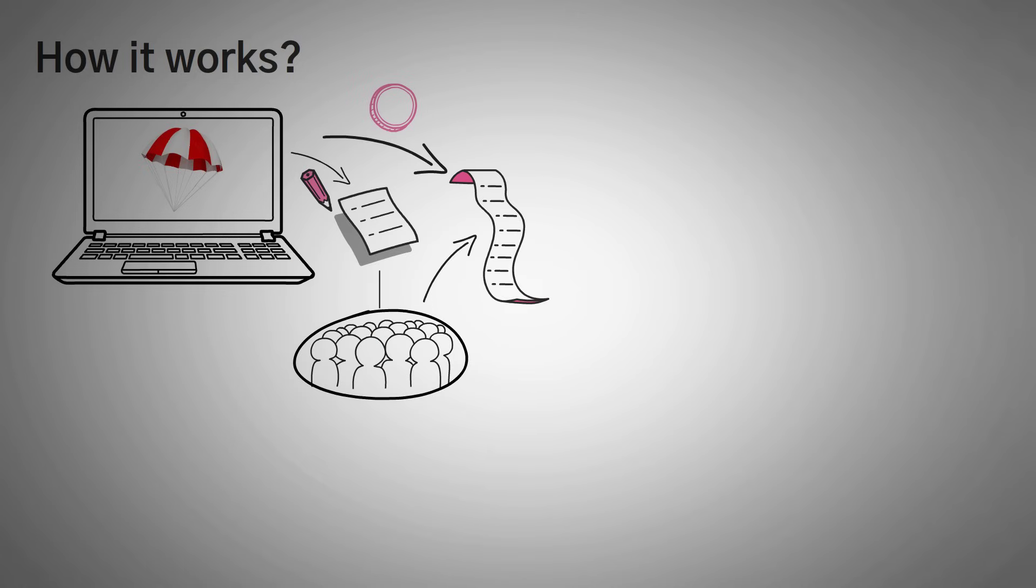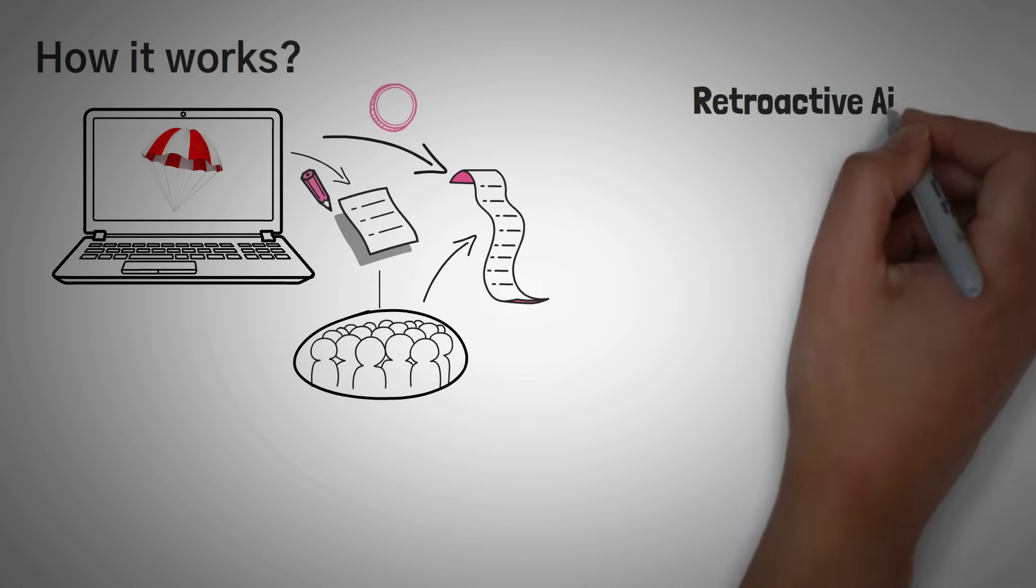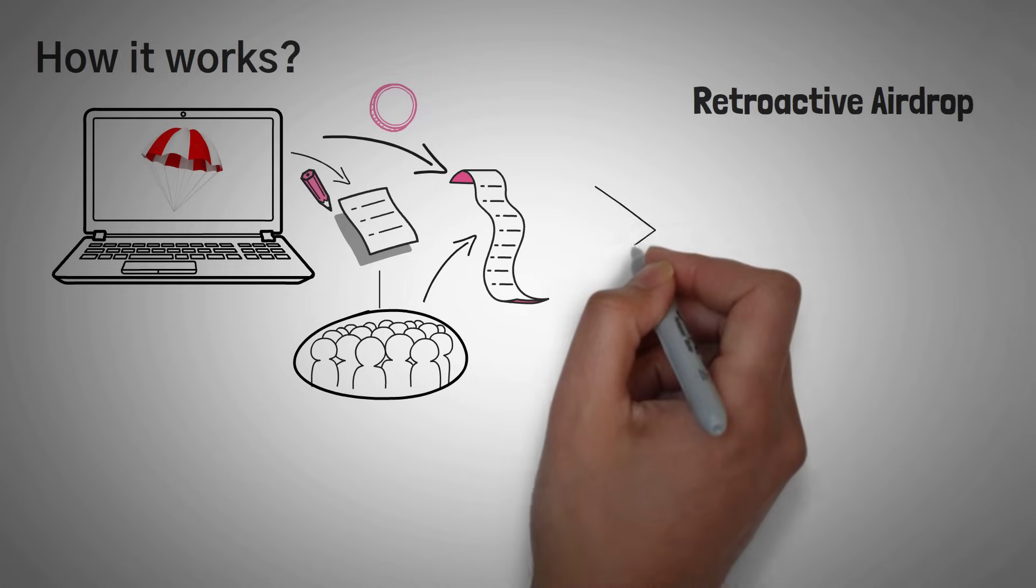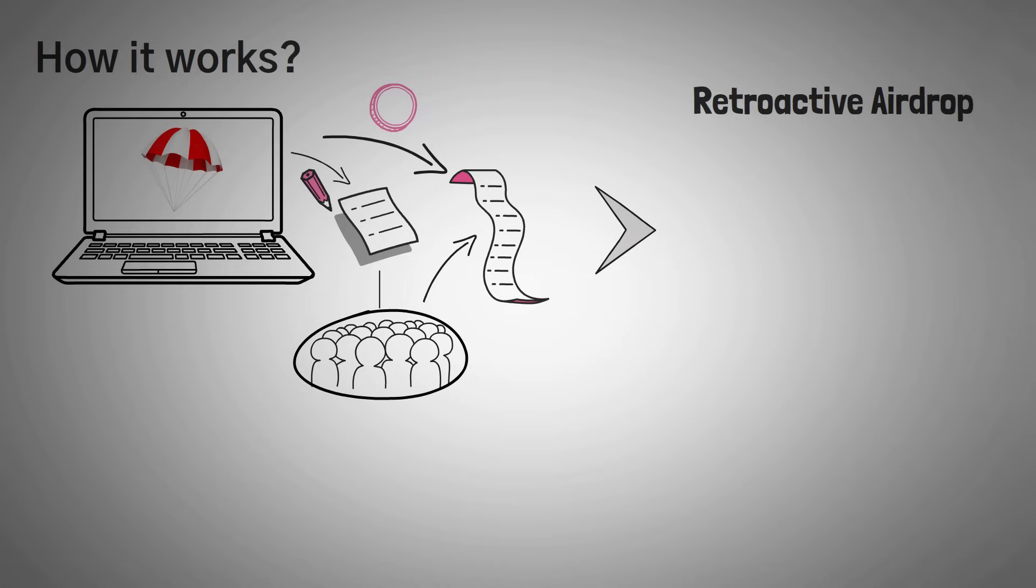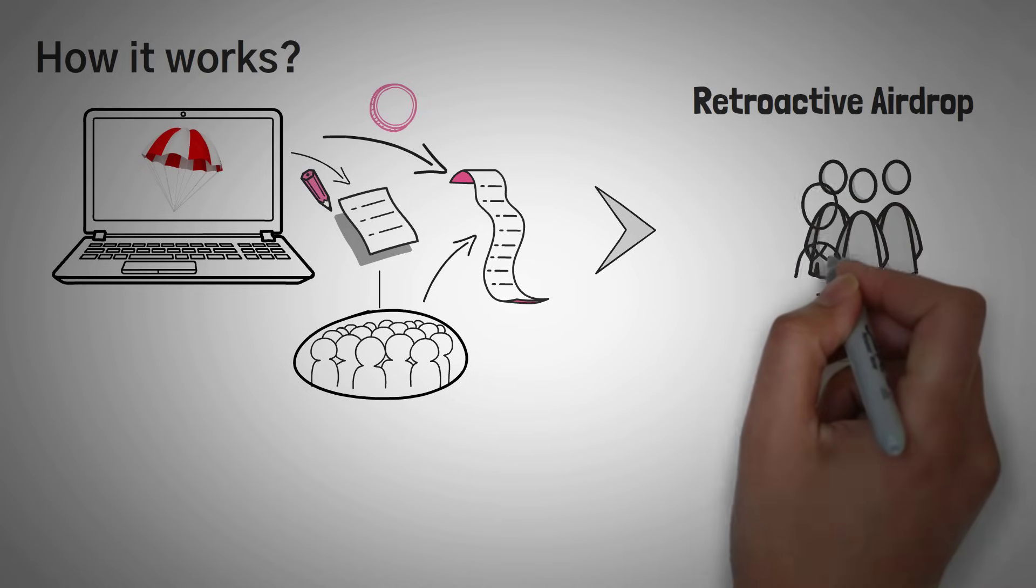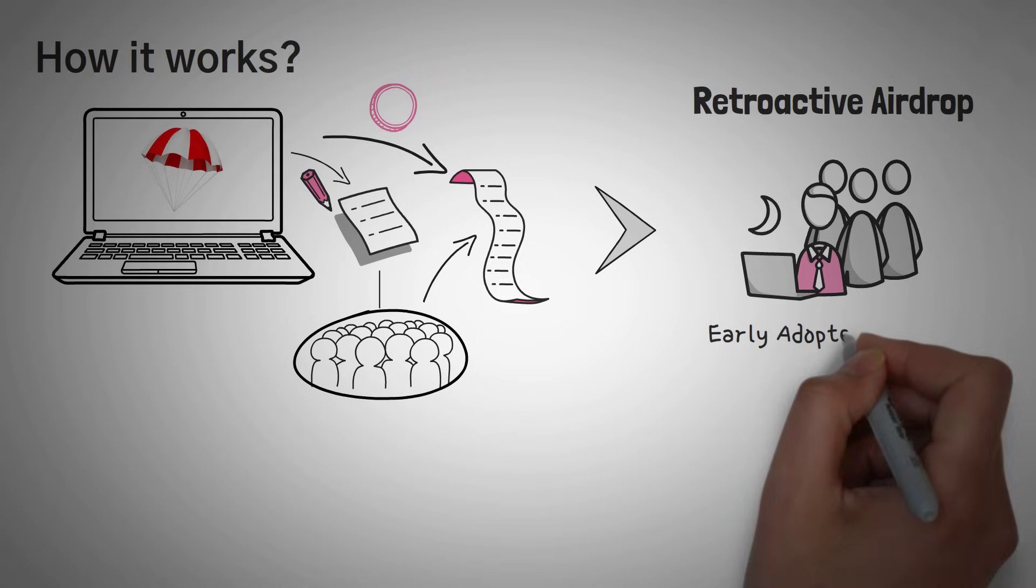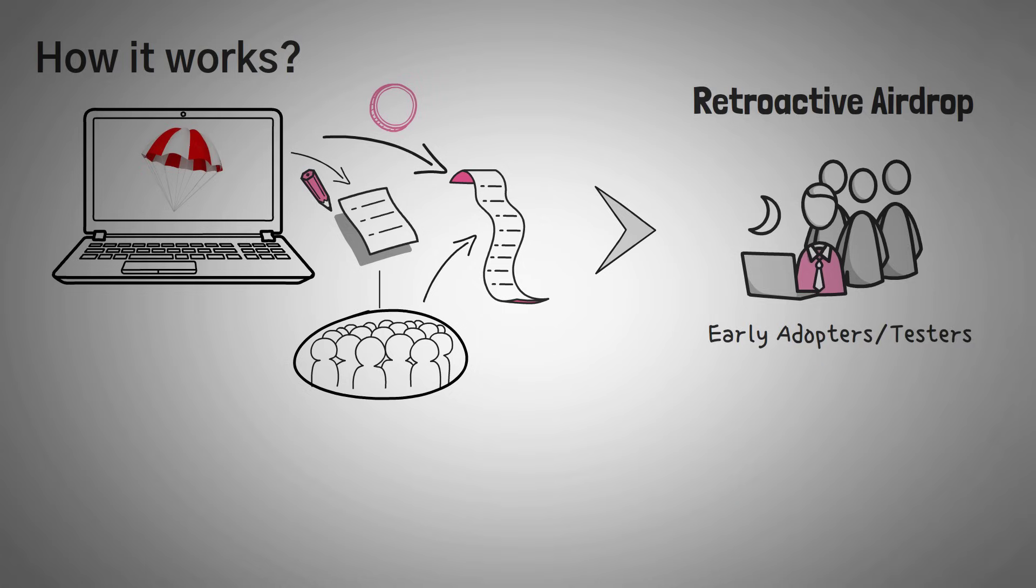And one more thing, this is actually called a retroactive airdrop because Uniswap looked back in the past and made a list of wallets instead of using their current list. They did this on purpose. They only wanted to reward the early adopters and testers of the platform.